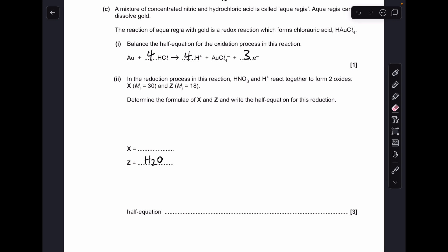Moving on to the next part, the obvious choice for Z with an MR of 18 is going to be H2O, and then for X with an MR of 30, just think about the atoms you've got, so NO will give you that 30.